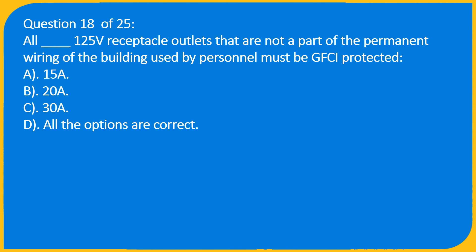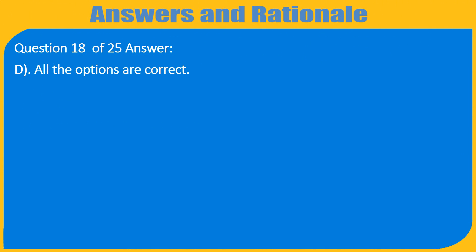Question 18 of 25: All 125-volt receptacle outlets that are not part of the permanent wiring of the building and are used by personnel must be GFCI protected. A. 15A, B. 20A, C. 30A, D. All the options are correct. Answer: D. All the options are correct.